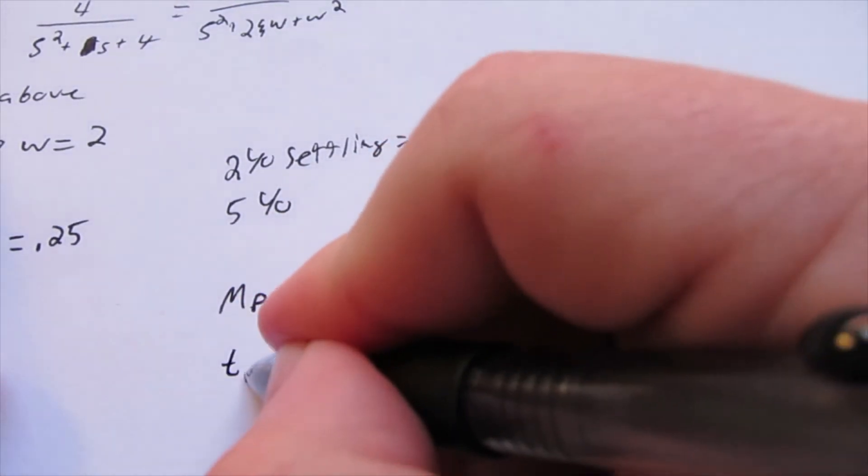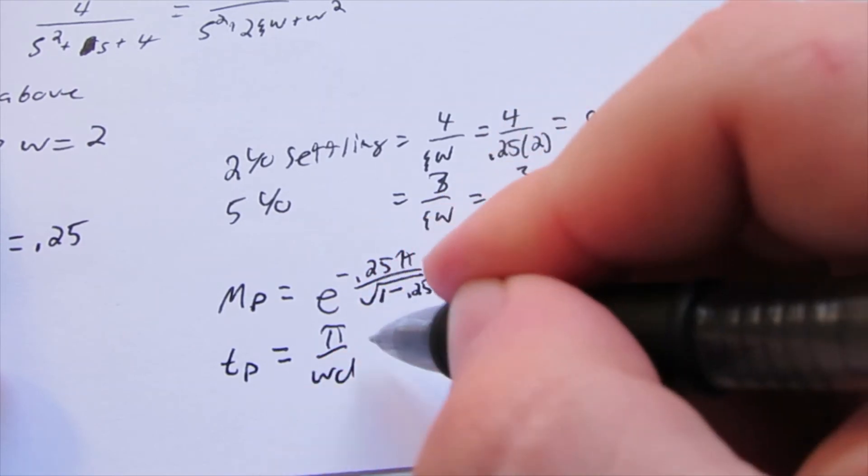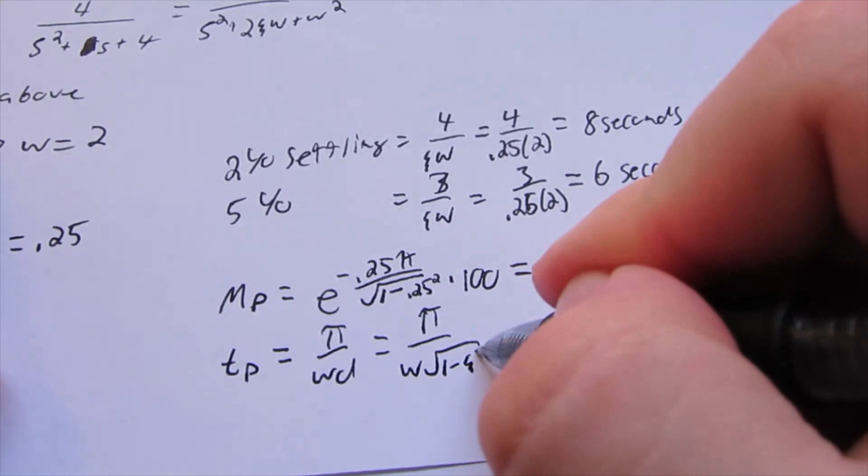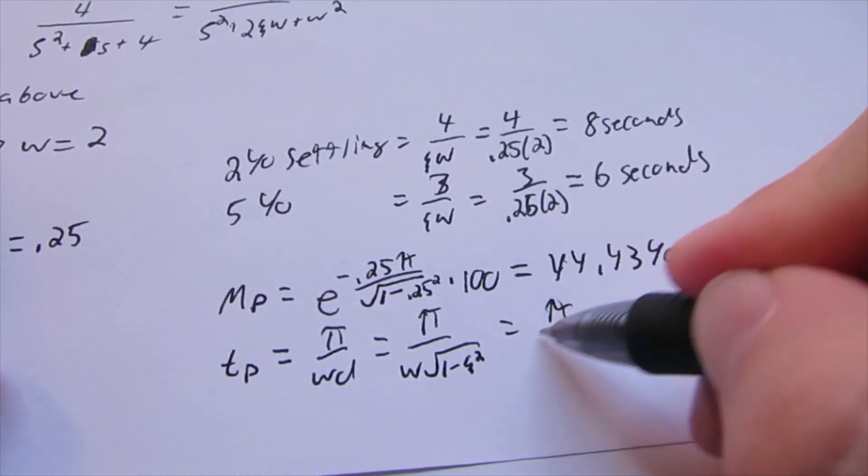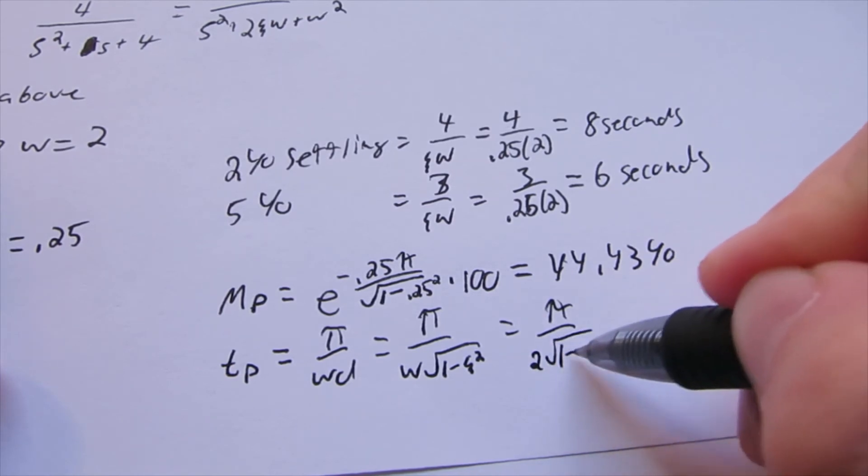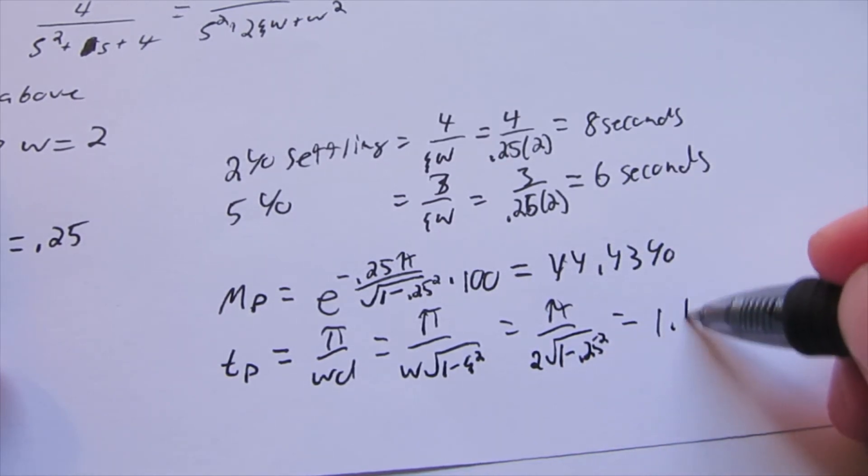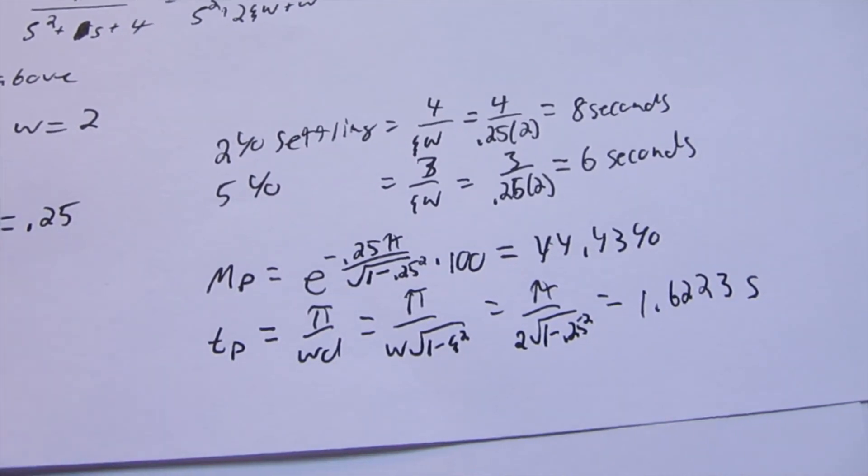Now for peak time. Now remember, damped frequency is pi divided by zeta squared there. We have a 2 square root of 1 minus 0.25 squared. That equals 1.6223 seconds.